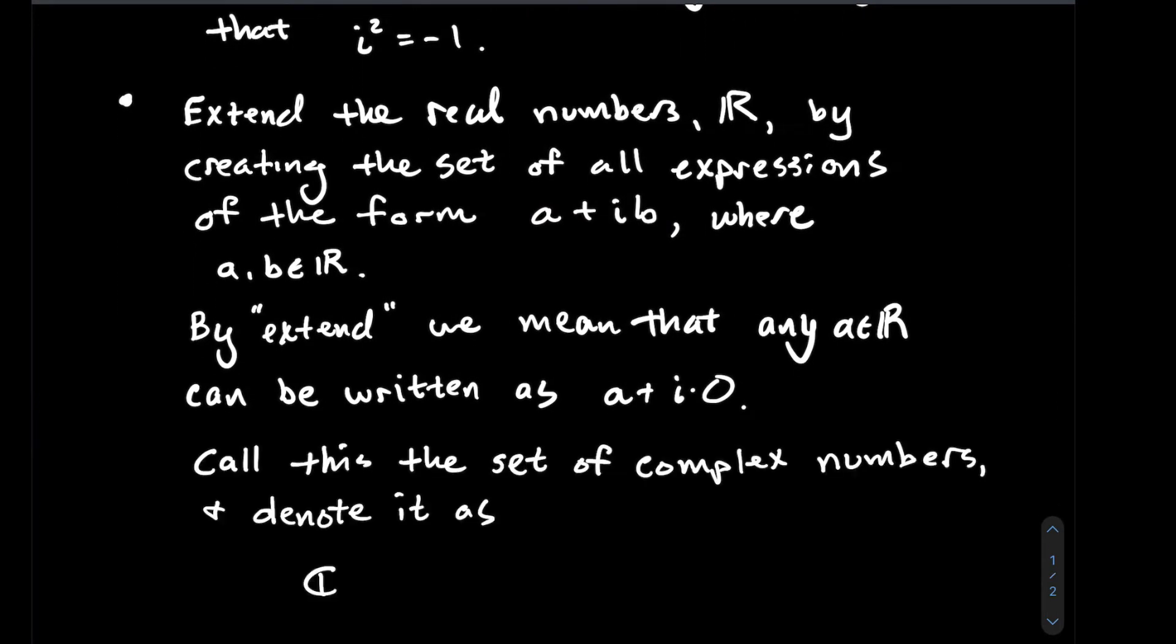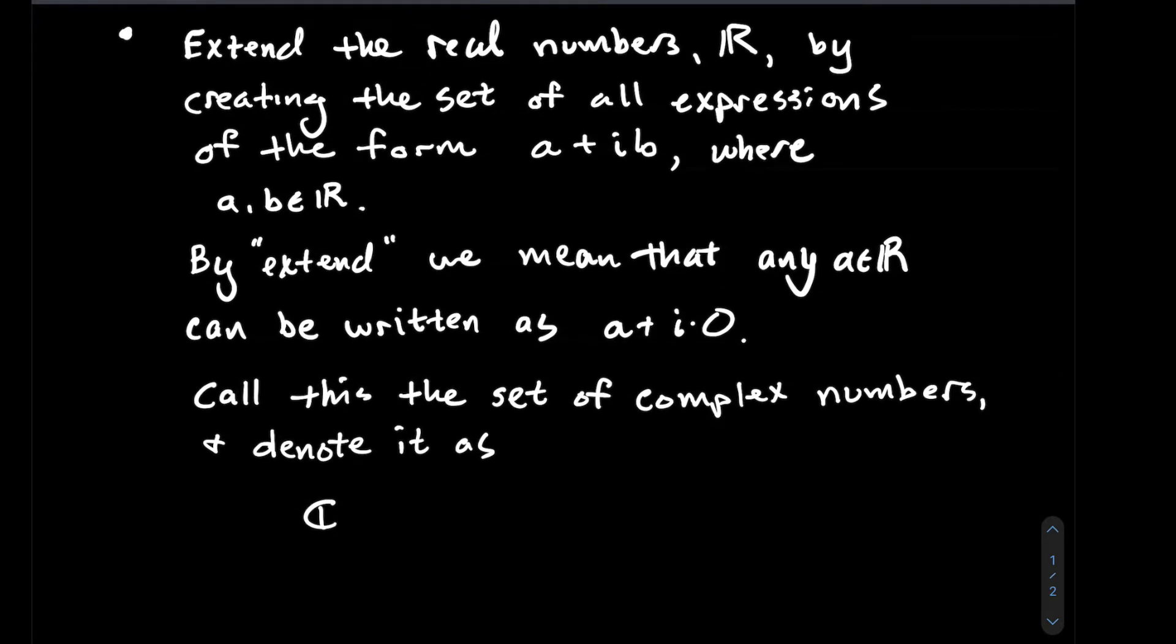We're going to call this set the set of complex numbers, denoted by this boldface C. It's all expressions of the form a plus bi where a and b are two real numbers.